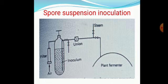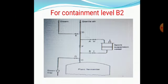This is called good industrial large scale practice, GILSP, which we follow for containment level B1. The next example is for containment level B2, which is a little more complicated compared to B1 because B2 involves a genetically engineered organism that may be slightly harmful — a higher level than B1. In the diagram, the concept is the same: a spore suspension vessel is there and the inoculum must be supplied into the plant fermenter. Many valves are labeled A, B, C, D, E, F, G on the pipelines.